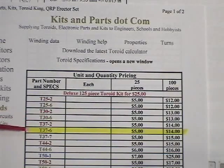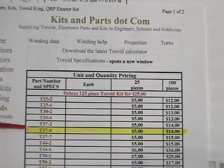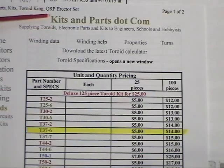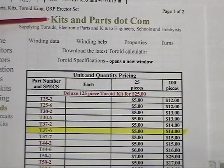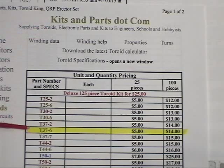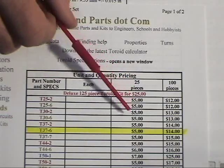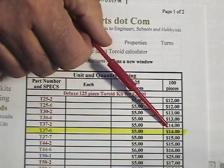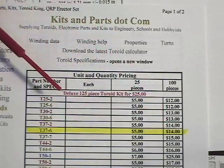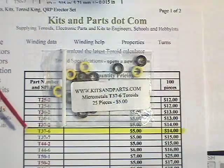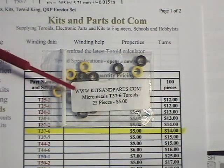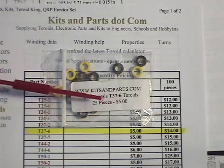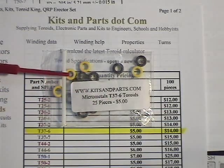Now we know what we need, how do we get the parts? If you go to kitsandparts.com website, he has this order form for his cores. He has T37-6 cores, 25 pieces for $5. If you really want to go in production, you can get 100 of them for $14. When you order that, what you'll get is a little package like this with the cores. Here's 25 pieces for $5. We have the cores.